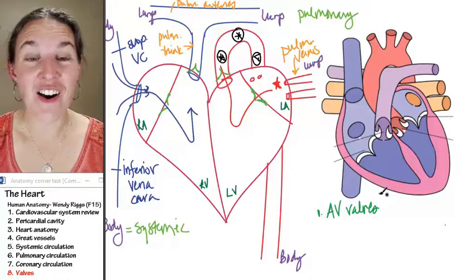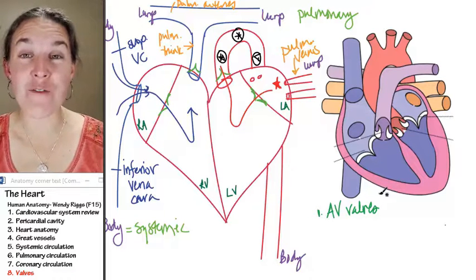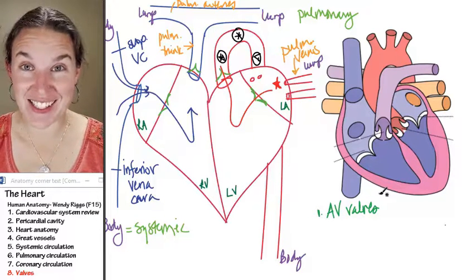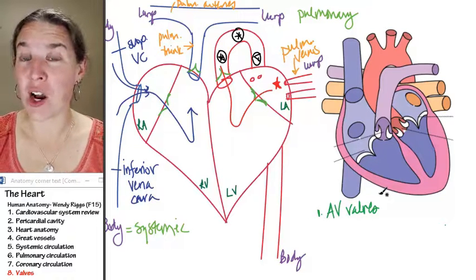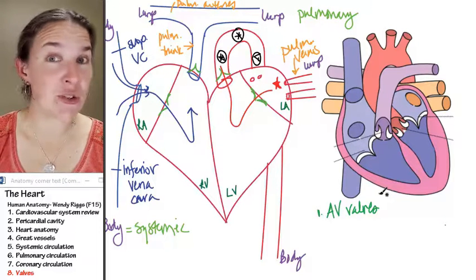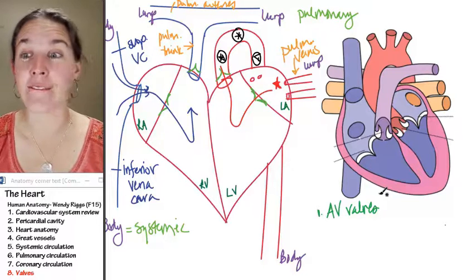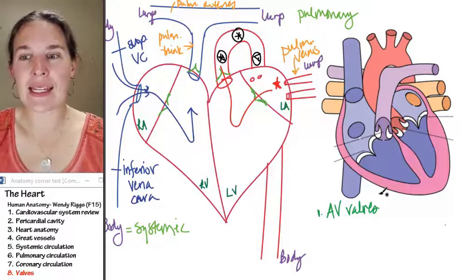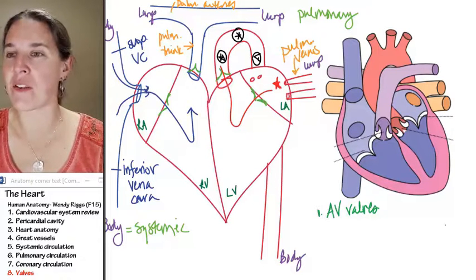AV valves are also known as atrioventricular valves, and atrioventricular valves are between the atrium and the ventricle. Done. And yes, you can call them AV valves if you would like.